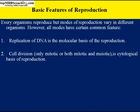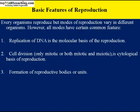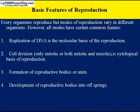Next, cell division is the cytological basis of reproduction. Division or multiplication of cells, either by mitotic or meiotic division, is an essential step in reproduction. Next, formation of reproductive bodies or units — formation of gametes, fusion of gametes and formation of zygote. After that, development of reproductive bodies into offspring is an essential part of all types of reproduction. These four are the common features in all types of reproduction.